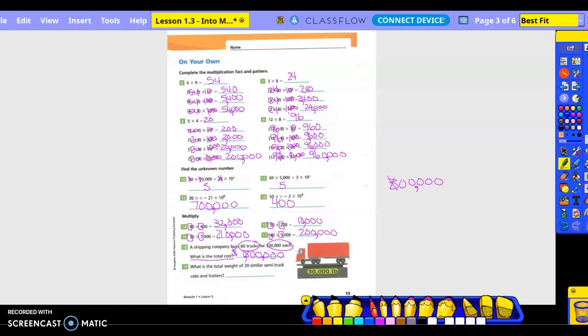Number 19. What is the total weight? It's 20 similar semi-truck cabs and trailers. So 20, right? And then over here is our other information, and then total weights of those. So three times two is six.